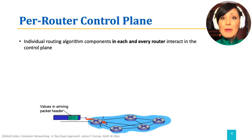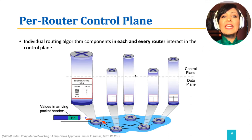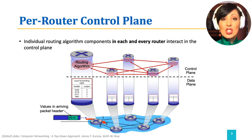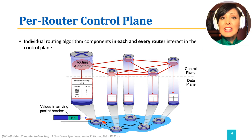In the distributed approach, or the per-router control plane, which is the traditional approach, individual routing algorithm components run in each and every router and they interact with each other router in the control plane. They exchange information to converge on routing decisions and write the forwarding tables in the data plane on the local router based on the routing decisions. This means that each router writes its own forwarding tables.